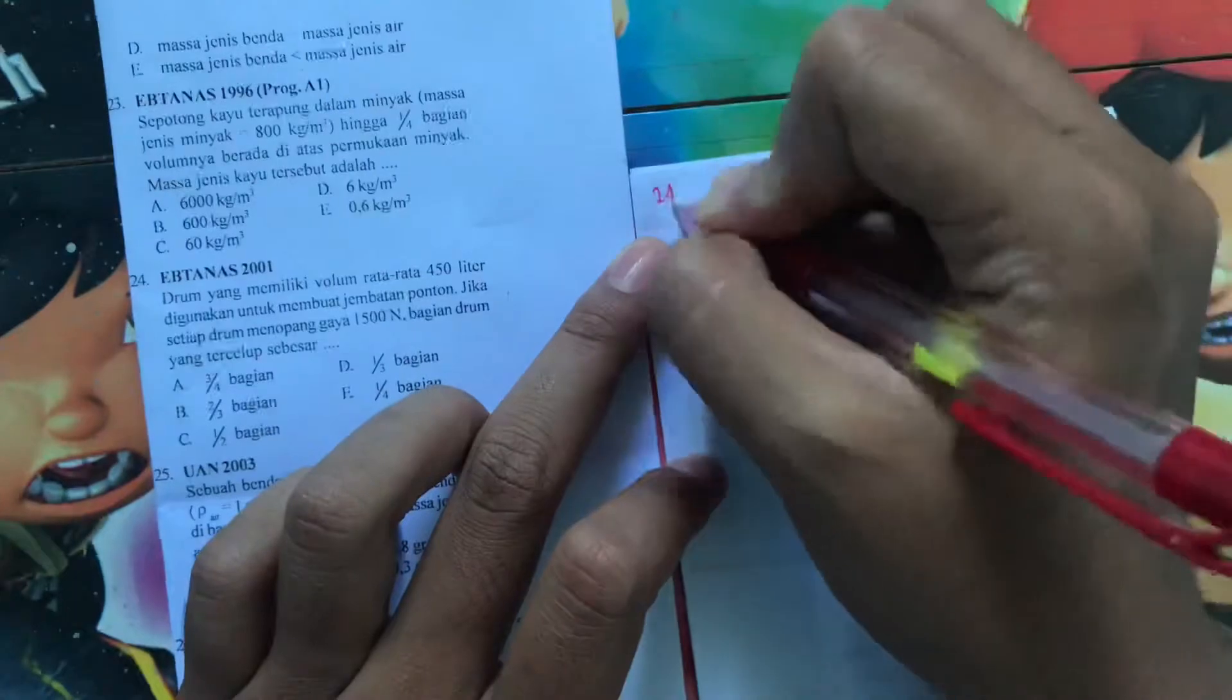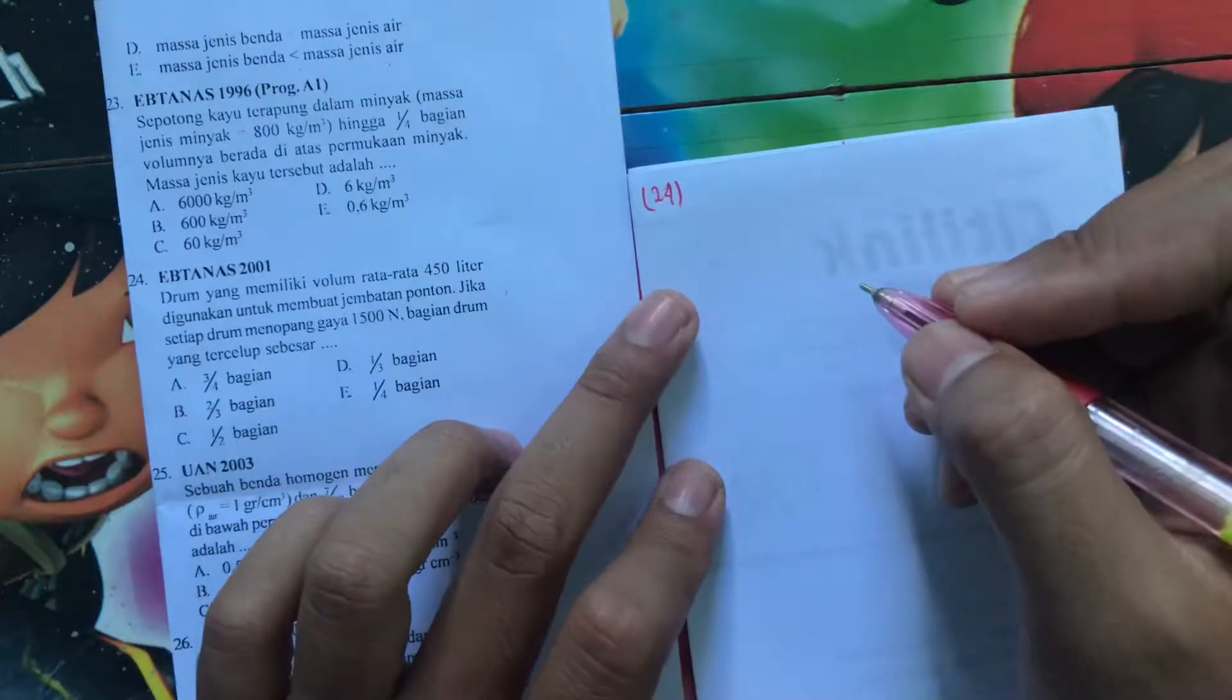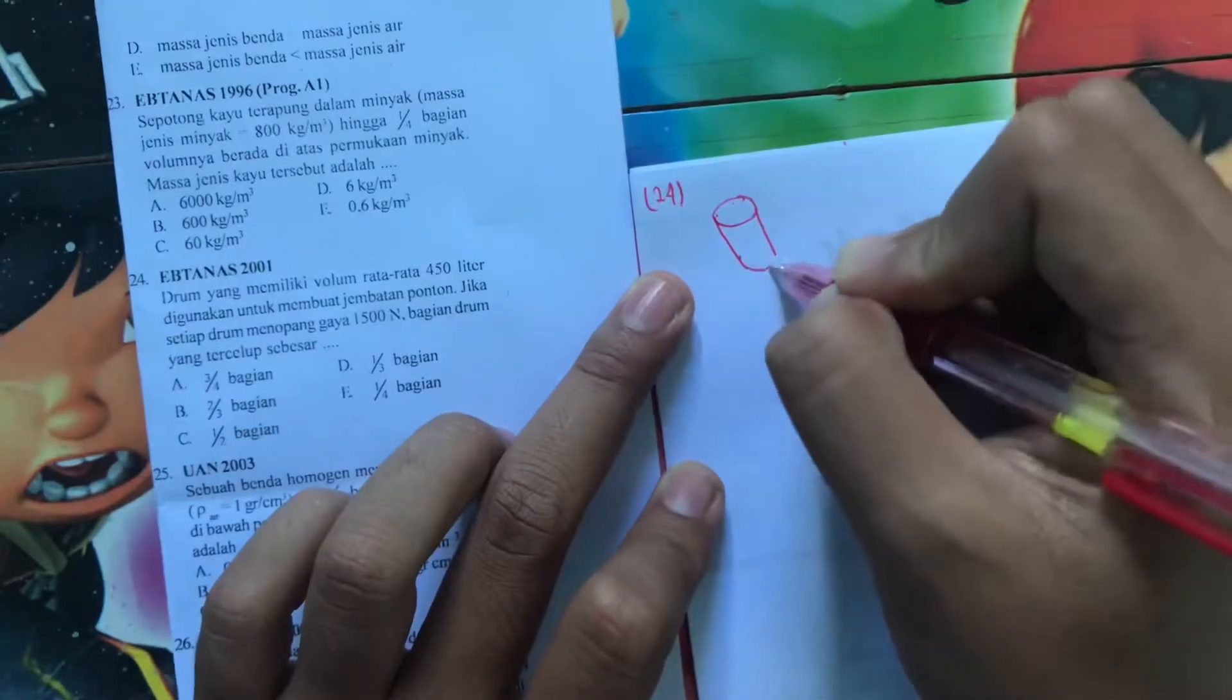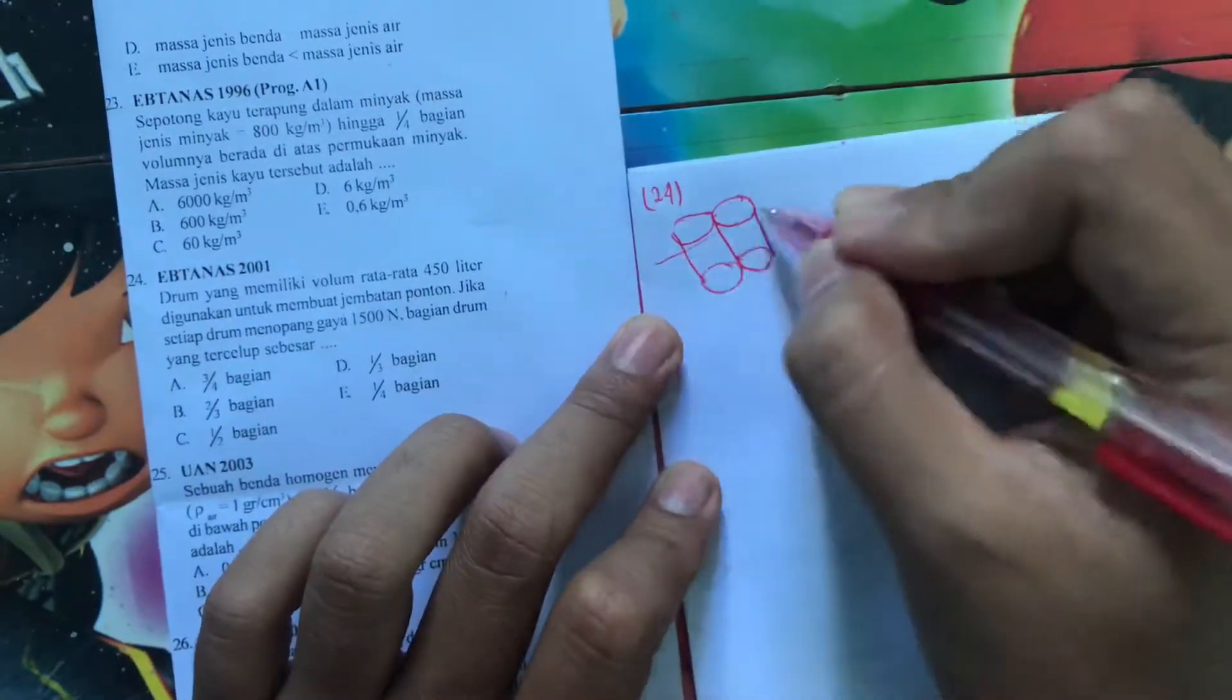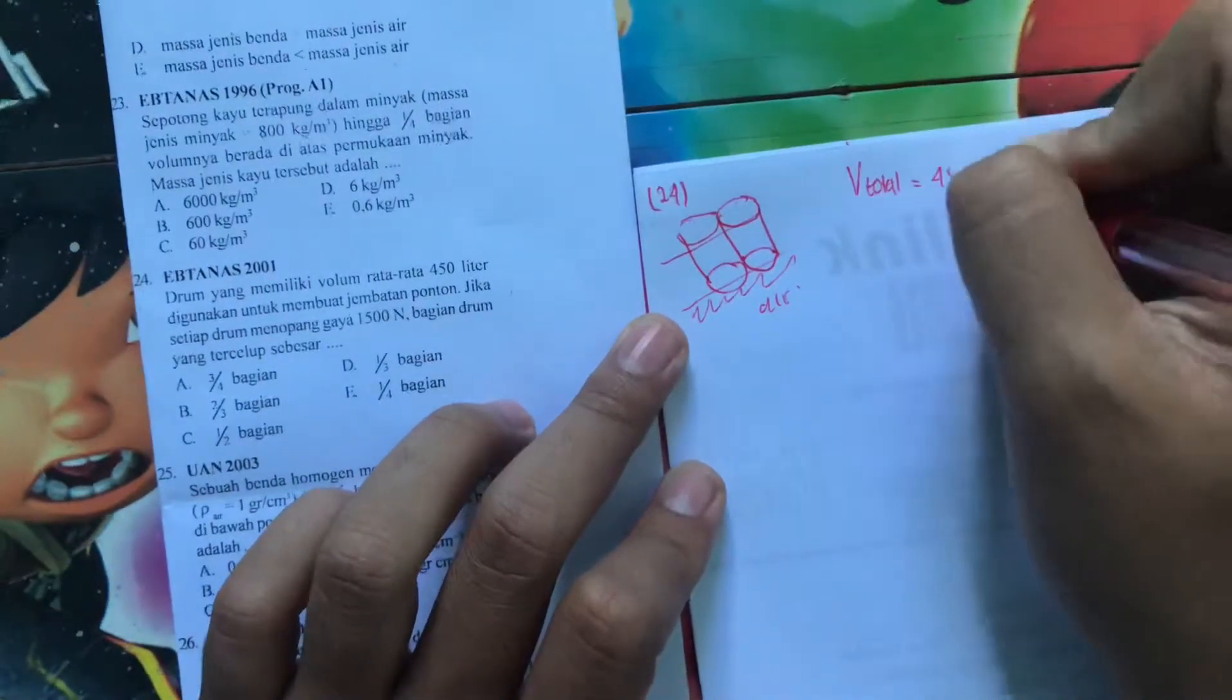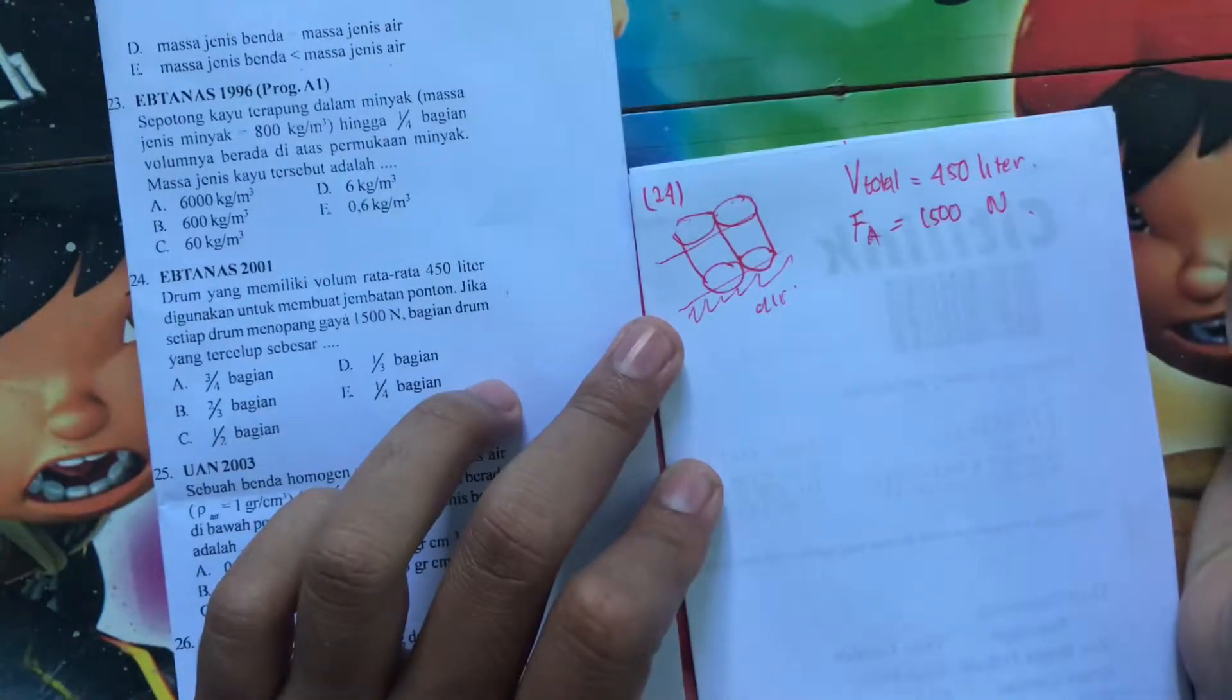Selanjutnya kita ke nomor 24. Drum yang memiliki volume rata tanpa 150 liter digunakan untuk membuat jembatan ponton. Jika setiap drum menopang gaya 1500 N, bagian drum yang tercelup sebesar. Berarti kan ceritanya jembatan ponton itu jembatan dari drum. Jadi kira-kira seperti ini bentuknya. Terus disini kan gabungan-gabungan banyak drum. Tapi untuk kasus ini kita lihat cuma satu doang. Ini disini airnya. Berarti kan ini kita dapat volume totalnya adalah 450 liter. Gayanya berarti FA-nya itu adalah 1500 N.